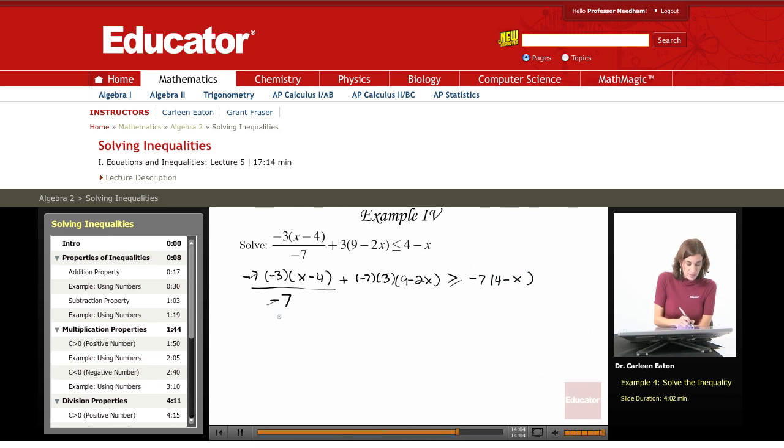Okay, this cancels. That gives me negative 3 times x minus 4. And this is negative 7 times 3, so that's minus 21 times 9 minus 2x. It's greater than or equal to negative 7 times 4. That's negative 28. Negative 7 times negative x. That's plus 7x.